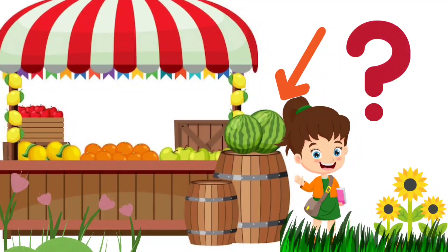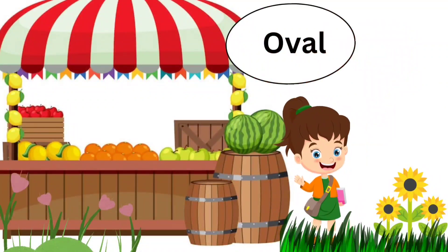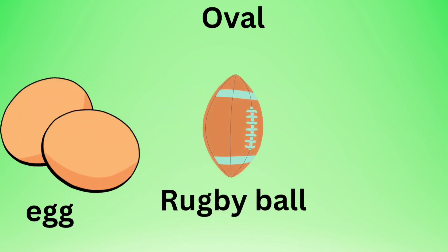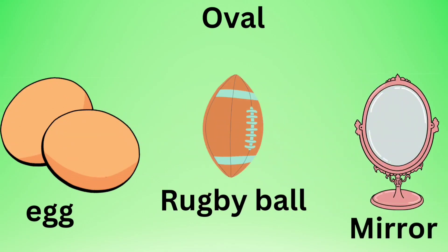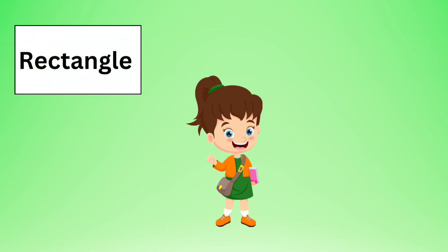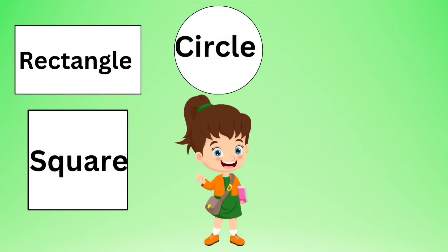Hi, we are at a fruit market. Look, there is a watermelon. What shape is it? Yes, it's an oval shape. Some examples: egg, rugby ball, mirror. These all are oval shapes.